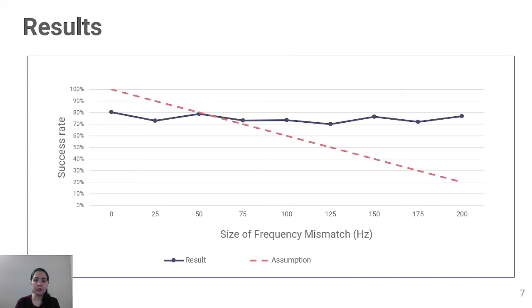We calculated the average rate of success for each participant based on the size of the vibration frequency mismatch. We assumed that when both vibratory frequencies were the same, the rate of detection would be high and that detection rate would decrease as the gap between vibratory frequencies increased.